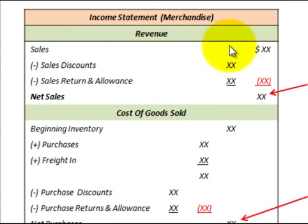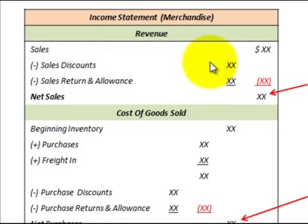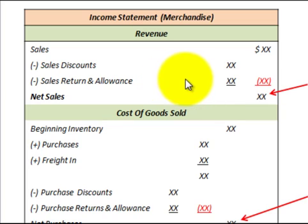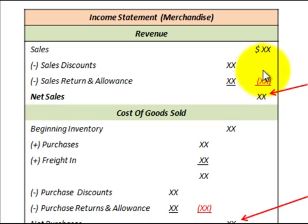We take our sales for the period, then we subtract out the sales discounts and subtract the sales returns and allowances. We come up with a total amount there, and then we subtract that from sales for the period, which gives us the net sales.